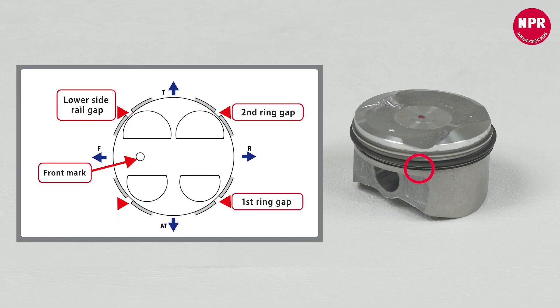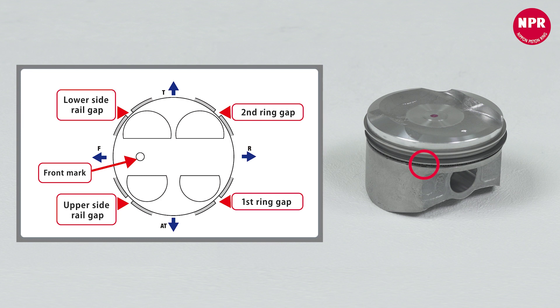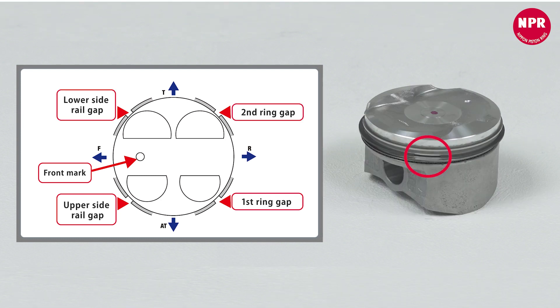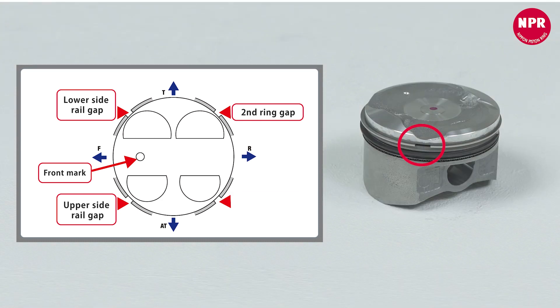Lastly, adjust and set the positions of the end gap of each ring as shown in the image. Correctly positioning them will prevent gas leaks and initial oil leaks into the combustion chamber.